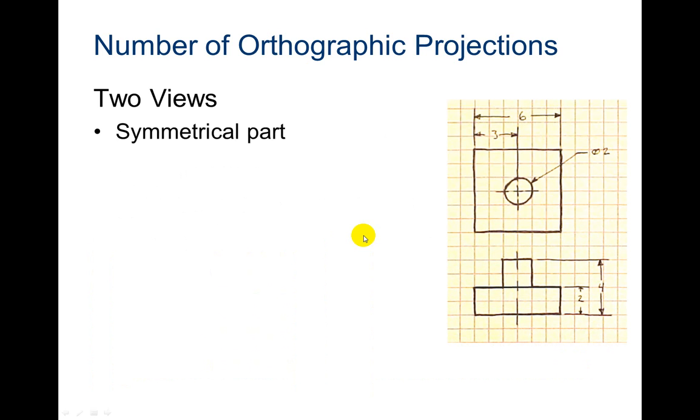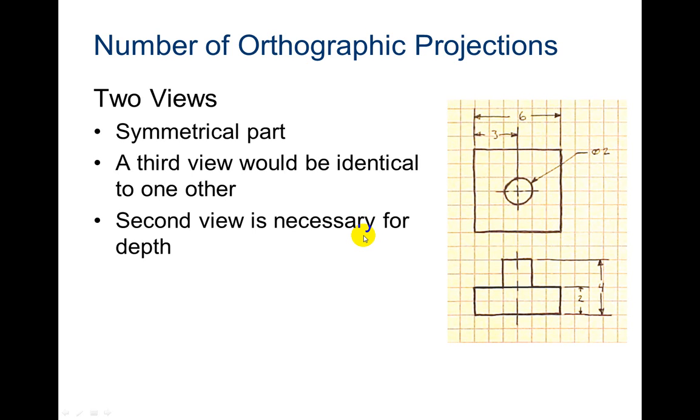Two views. That's a symmetrical part. A third view would be identical to one of the others. Or a second view is necessary for depth, then you're going to go ahead and do two views. You won't need that third view. In this one, they just have the front and the top. But a right view would look exactly like this view, the front view. So they don't need that third view. So they would only draw two views.